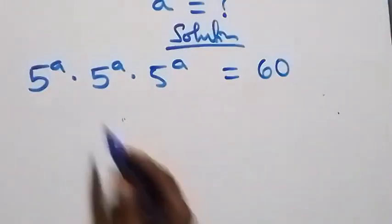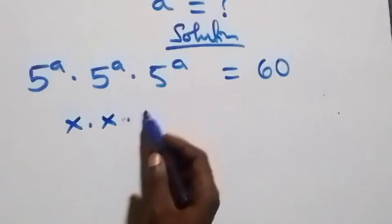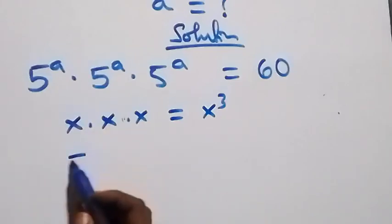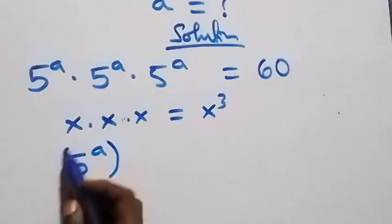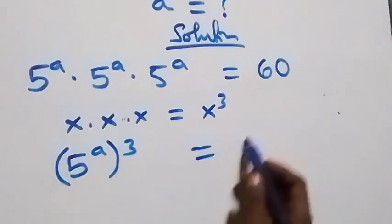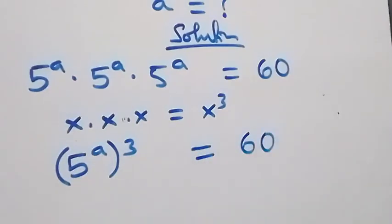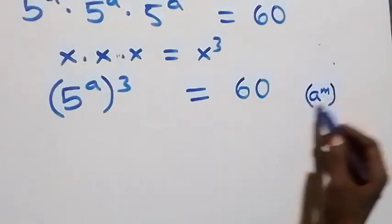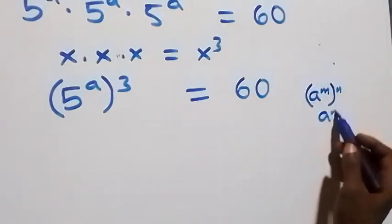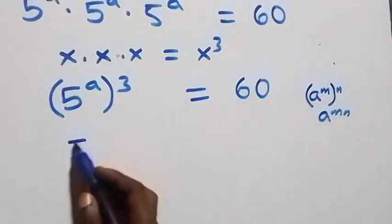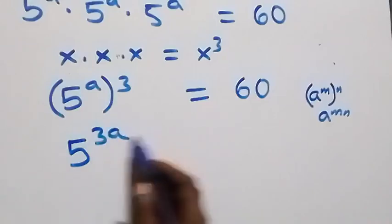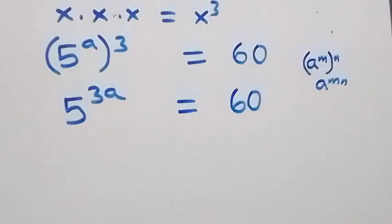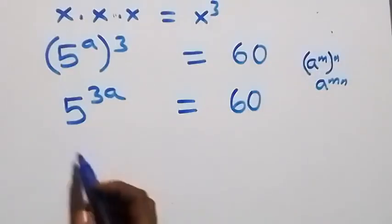Here we have x times x times x, which we can write as x raised to power 3. Similarly, we can write this as 5 raised to power a, then raised to power 3, which equals 60. From the law of indices, when we have a raised to power m raised to power n, the powers multiply, giving us a raised to power mn. So this is the same as 5 raised to power 3a equals 60.